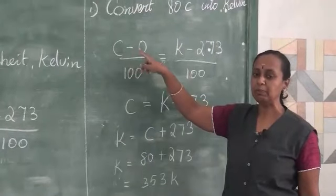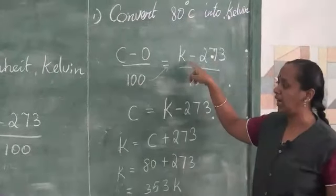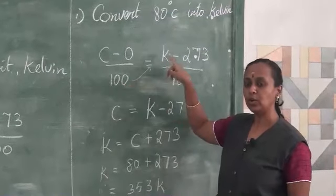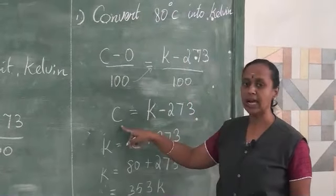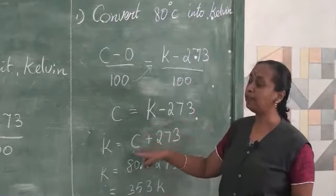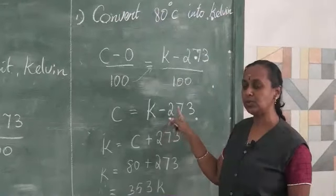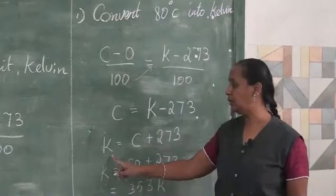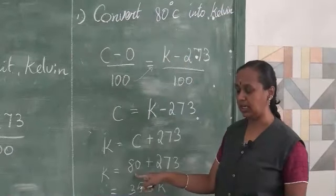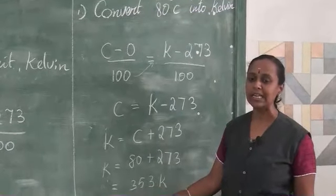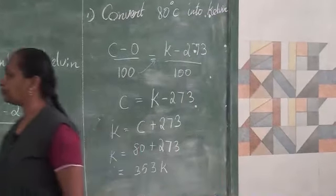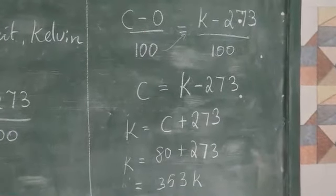To repeat: the formula is (C − 0)/100 = (K − 273)/100. When you cross-multiply, the 100s cancel, giving C = K − 273. Rearranging, K = C + 273. With C = 80 degrees Celsius, K = 80 + 273 = 353 Kelvin. I hope you can understand this problem. We have another sum as well.